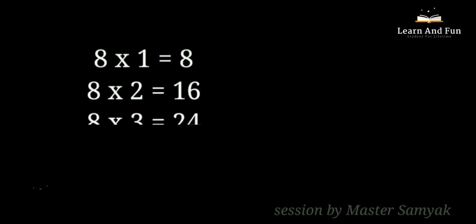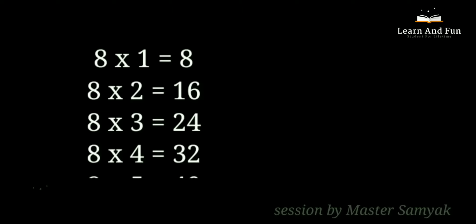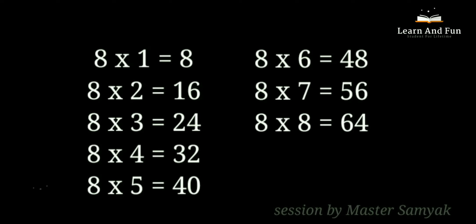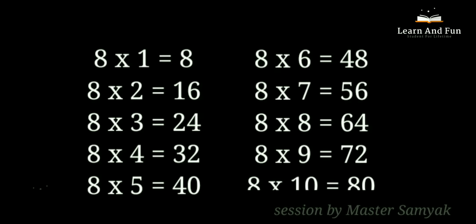8 ones are 8. 8 twos are 16. 8 threes are 24. 8 fours are 32. 8 fives are 40. 8 sixes are 48. 8 sevens are 56. 8 eights are 64. 8 nines are 72. 8 tens are 80.